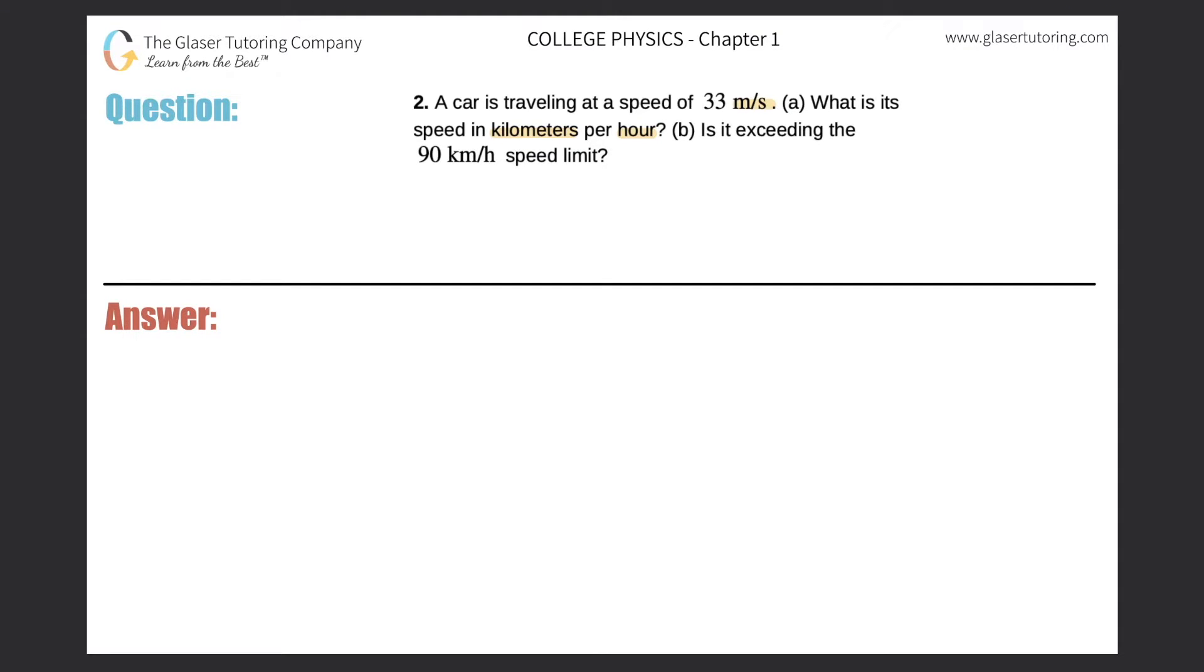So it looks like we have to do a conversion here. Let's write down what we're given. We're given 33 meters per second, that's per one second, and we're looking to convert that into kilometers per hour.